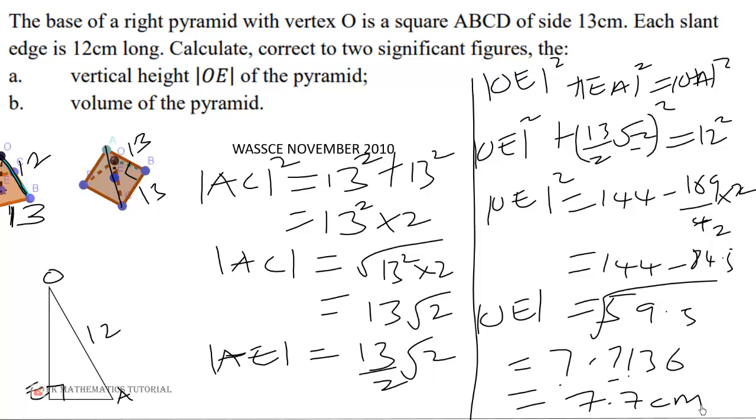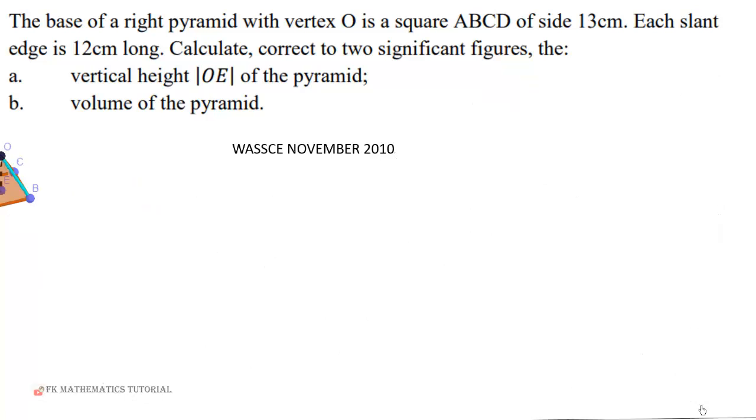Let's look at part B of the question. We are to calculate the volume of the pyramid. Recall that volume of a pyramid is one-third times the base area. So the base is 13 by 13 times the vertical height, which is 7.7136.